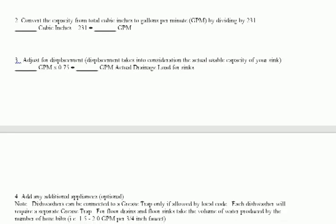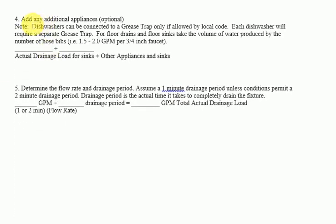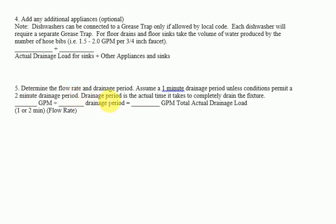Step 4 — Add any additional appliances. Note: dishwashers can be connected to a grease trap only if allowed by local code, and each dishwasher will require a separate grease trap. For floor drains and floor sinks, take the volume of water produced by the number of hose bibs — approximately 1.5 to 2.0 GPM per 3/4-inch faucet — and add to the actual drainage load for sinks.